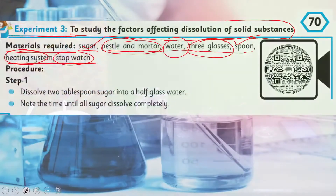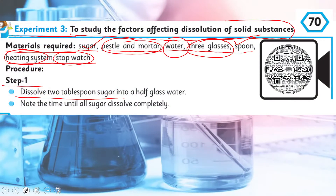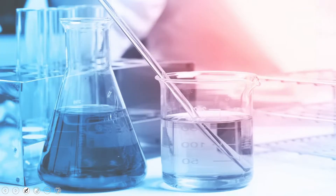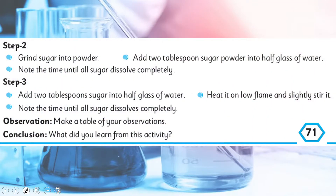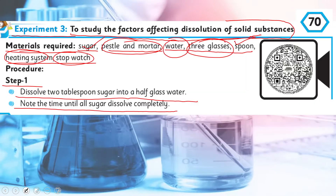Step one: dissolve two tablespoons of sugar into half a glass of water and note the time until all the sugar dissolves completely. First, we will take two tablespoons of sugar and add it to half a glass of water.